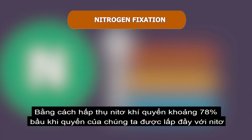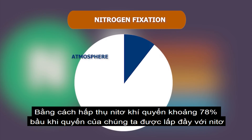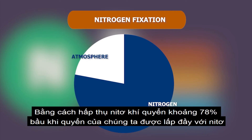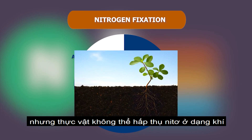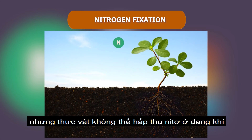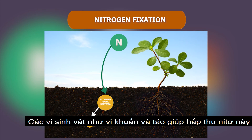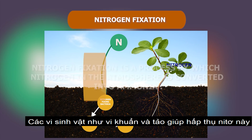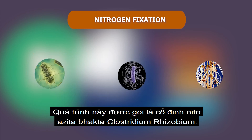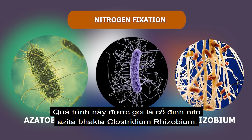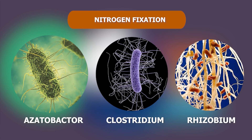Third, by absorbing atmospheric nitrogen. Around 78% of our atmosphere is filled with nitrogen, but plants cannot absorb nitrogen in gas form. Microorganisms such as bacteria and algae help in absorbing this nitrogen and convert it to compounds which can be easily absorbed by plants. This process is known as nitrogen fixation. Azotobacter, Clostridium, and Rhizobium are examples of nitrogen-fixing bacteria.